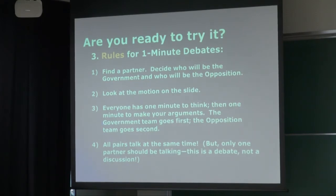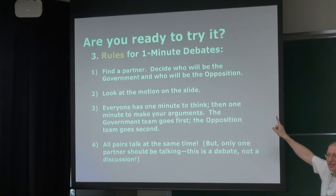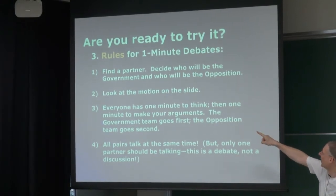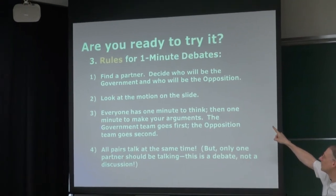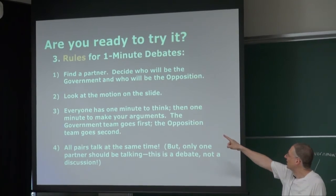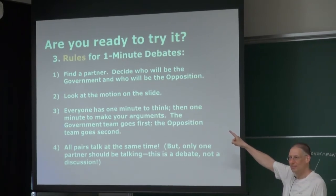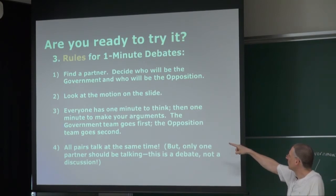We need rules. Rules for one-minute debates: one — find a partner, decide who will be the government and who will be the opposition. Two — do the motion on the side. Three — government gives a one-minute speech, then opposition gives a one-minute speech.